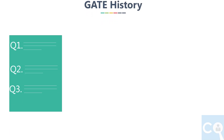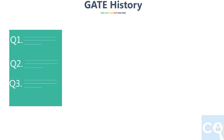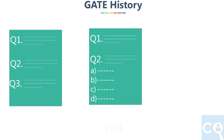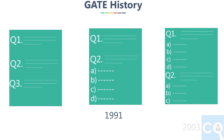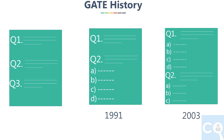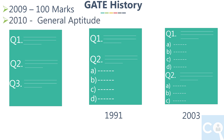Initially, the GATE paper was started as a conventional paper only. But after 1991, multiple choice questions were also added. And after 2003, only multiple choice questions were asked. From 2009, the 100 marks pattern came. And in 2010, general aptitude was introduced.